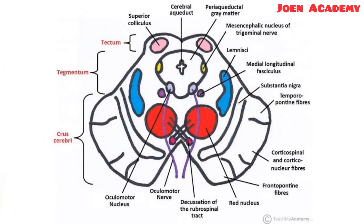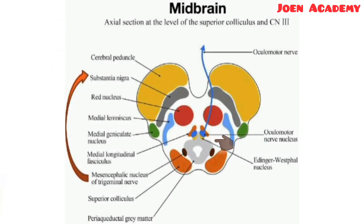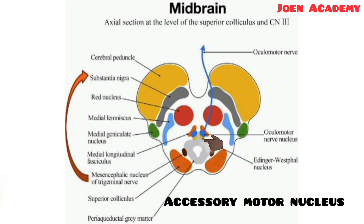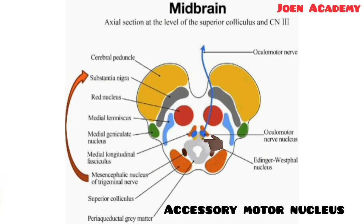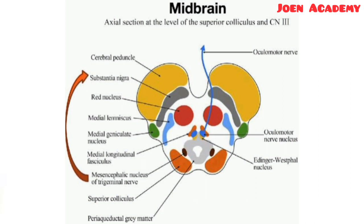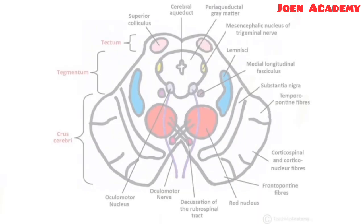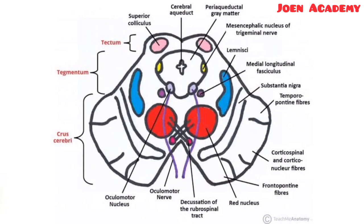The nuclei seen in the midbrain are the motor nucleus of the oculomotor nerve. It also contains the Edinger-Westphal nucleus, which can also be called the accessory motor nucleus of the oculomotor nerve. The nucleus of the trochlear nerve is also seen in the midbrain, likewise the mesencephalic nucleus of the trigeminal nerve. The red nucleus is also seen in the midbrain. Other gray matter structures include the substantia nigra and the periaqueductal gray matter.